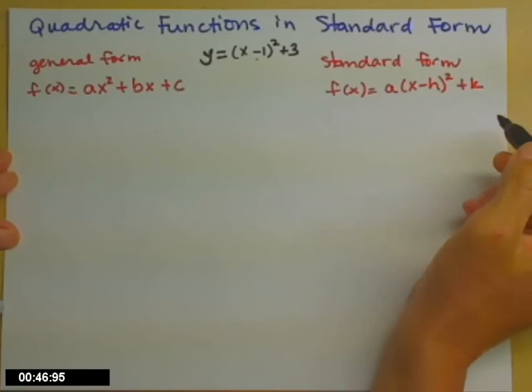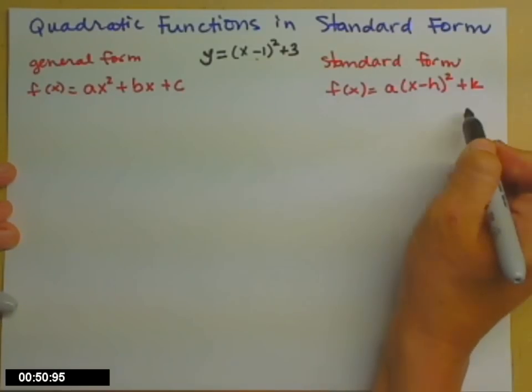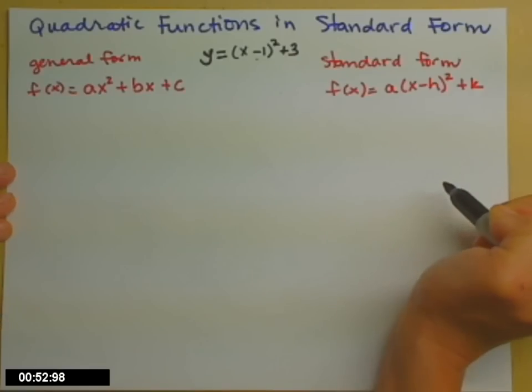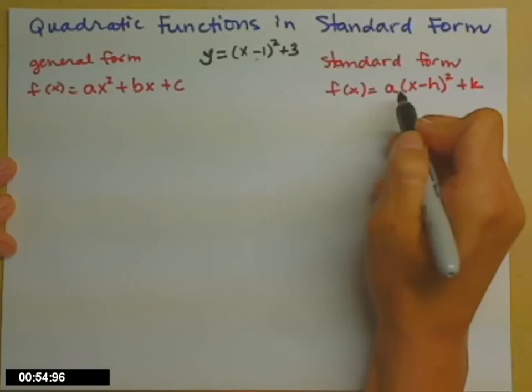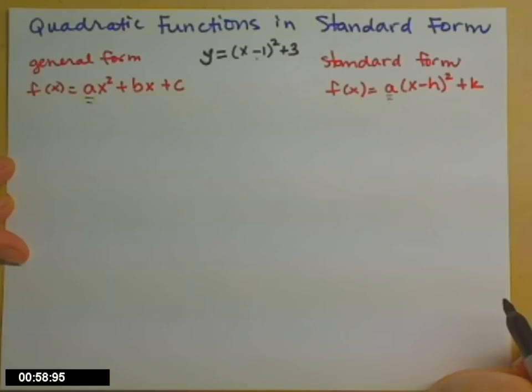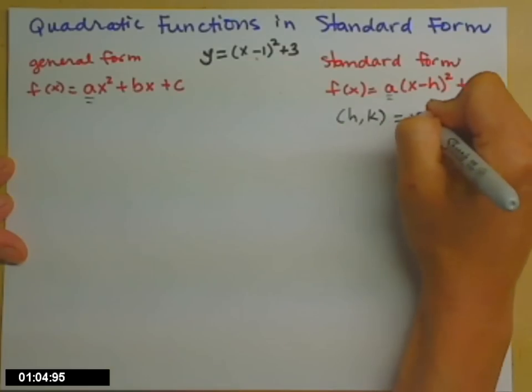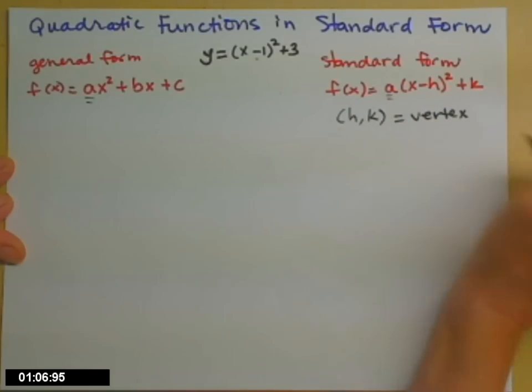And in standard form, here's some new letters. f of x equals a times the quantity x minus h squared plus k. I know it's a lot of letters. Try not to freak out. This a here is the same as the a that we had over here. But the h and k are the letters that correspond to the vertex of the parabola.